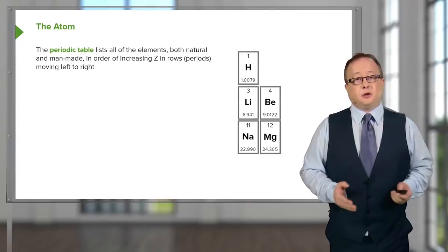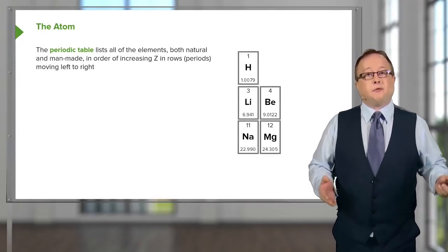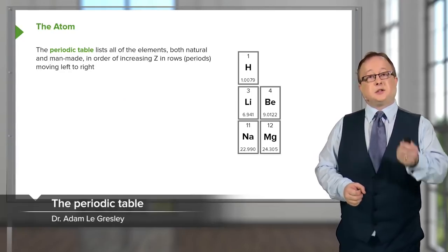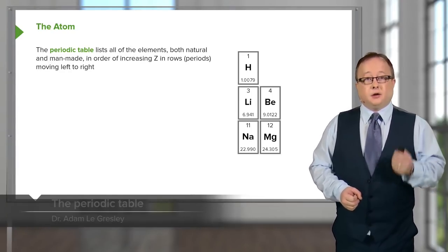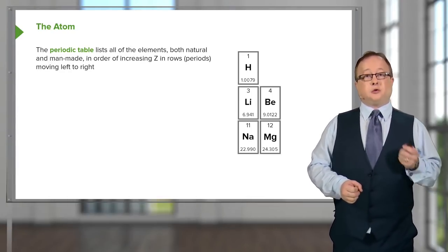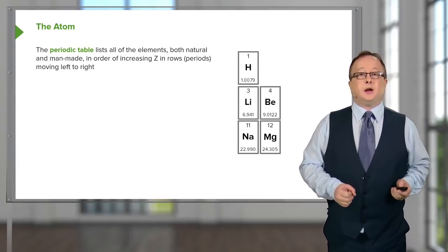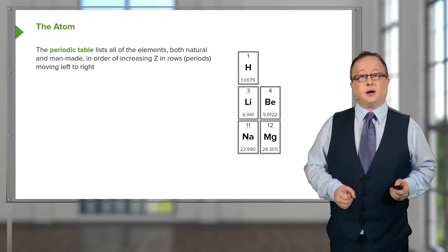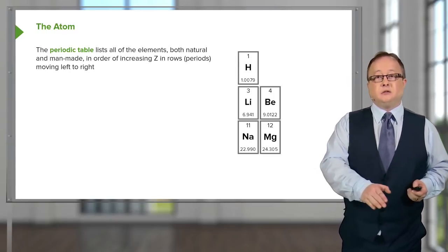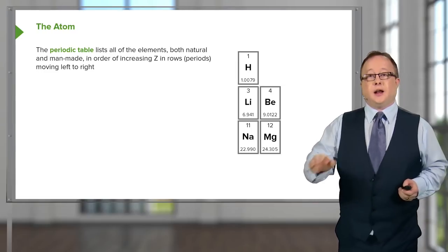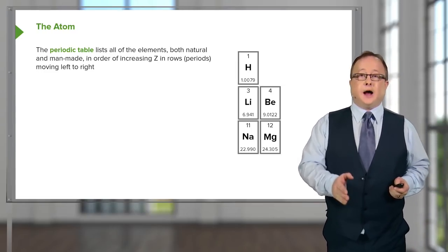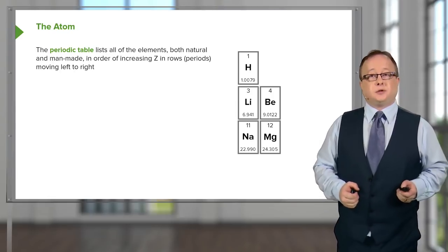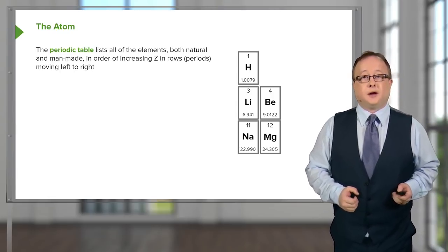You've probably all heard of the periodic table. It lists all of the elements, both natural and man-made, in increasing order of atomic number Z, moving from left to right. Here we have an extract from the first two groups, showing hydrogen H, lithium Li, sodium Na — remember, sodium actually relates to the Latin 'natrium', hence why its symbol is Na — beryllium, which is the fourth, and magnesium, which is in the third period.